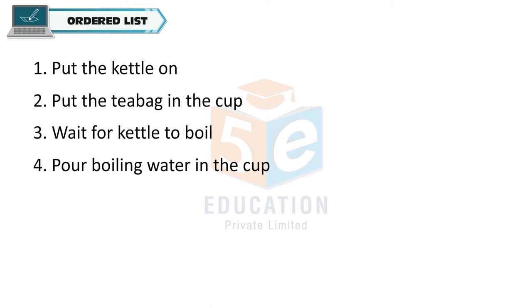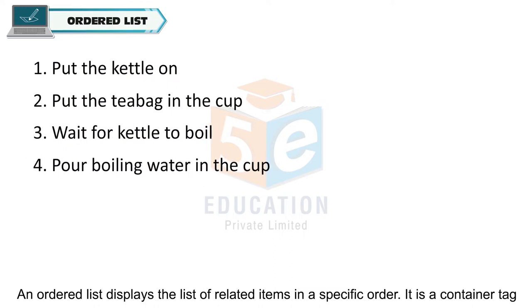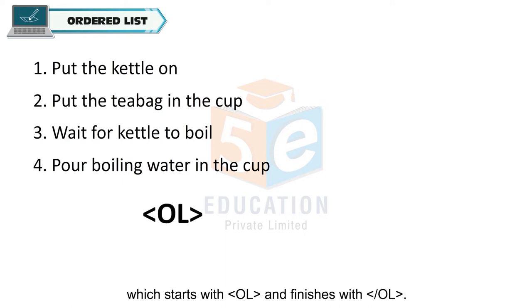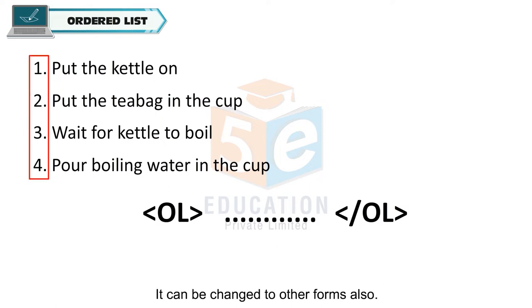Ordered list: An ordered list displays the list of related items in a specific order. It is a container tag which starts with the opening ol tag and finishes with the closing ol tag. By default, the contents get displayed with a numbered list item, but it can be changed to other forms as well.